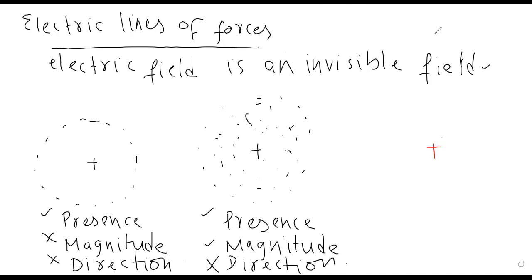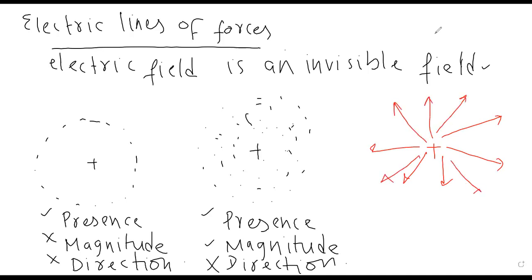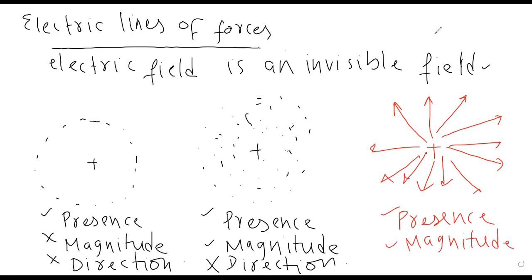Teen field lines — positive charge hai uski lines aise outward bahar niklein. Yeh outward electric lines of forces aise bahar niklenge. Is field line method mein isse presence ka bhi pata chala — obviously electric field present hai. Magnitude ka bhi pata chala — kyunki jo bhi charge se zyada lines pass hon to magnitude zyada hoga, field ki intensity zyada hogi; agar kam lines pass hon to field ki intensity kam hogi. Aur direction ka bhi pata chala — positive charge ki field outward banegi, negative charge ki field inward.